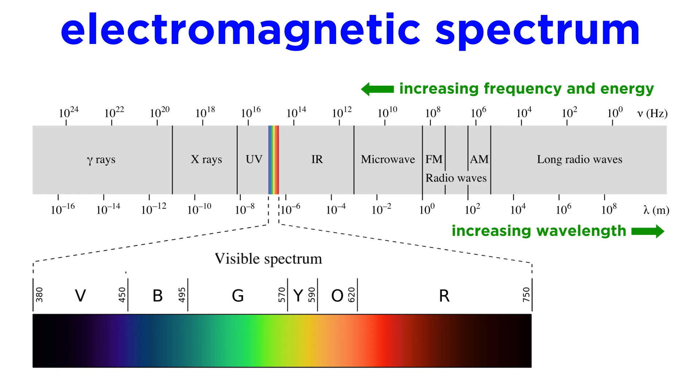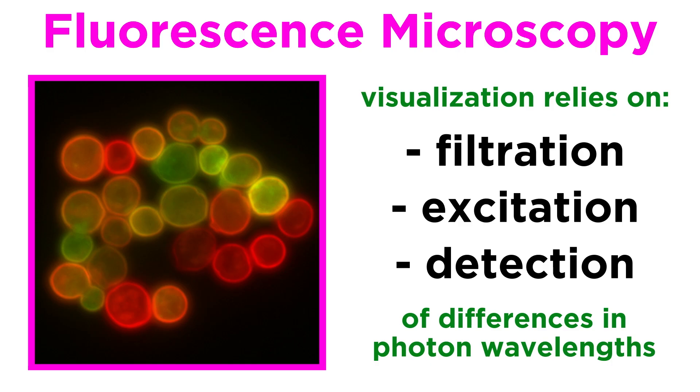As we recall from our study of classical physics, the energies of photons are inversely proportional to their wavelength. If a photon has a long wavelength, it is lower in energy, compared to a photon with a shorter wavelength which will be higher in energy. By filtering, exciting, and detecting these differences in photon wavelengths, fluorescence microscopes are able to visualize and differentiate between parts of the specimen that are labeled with different fluorescent molecules or proteins.